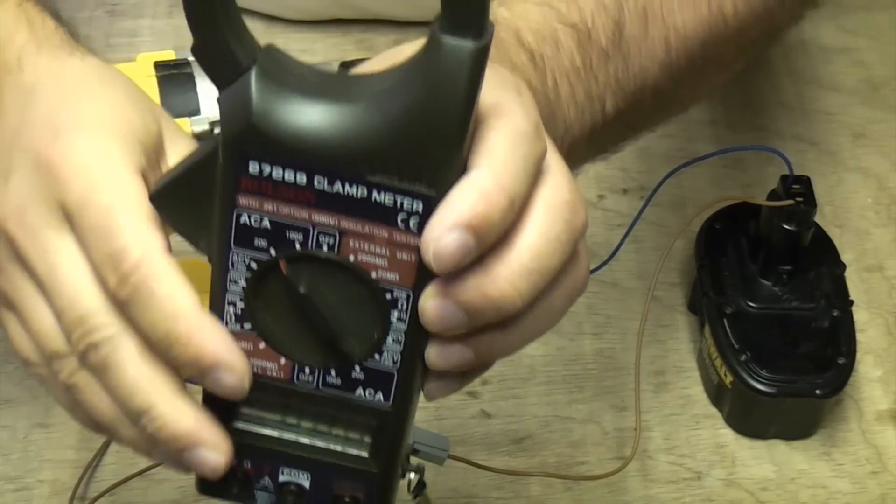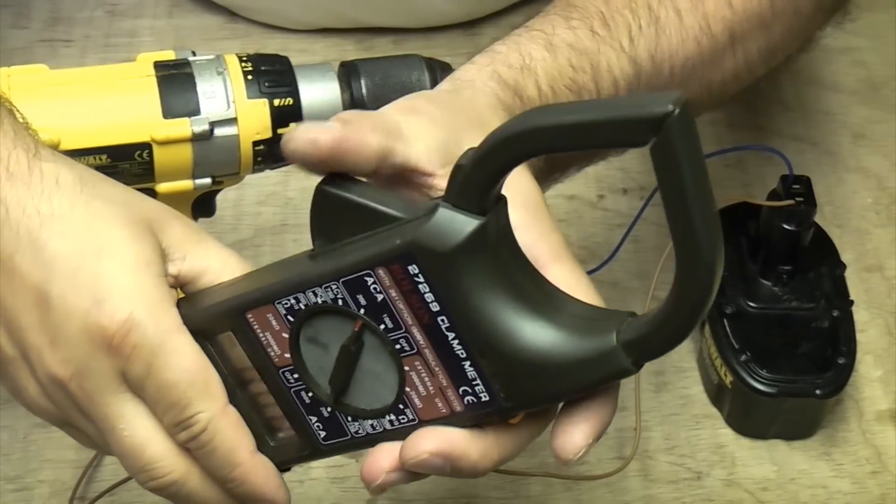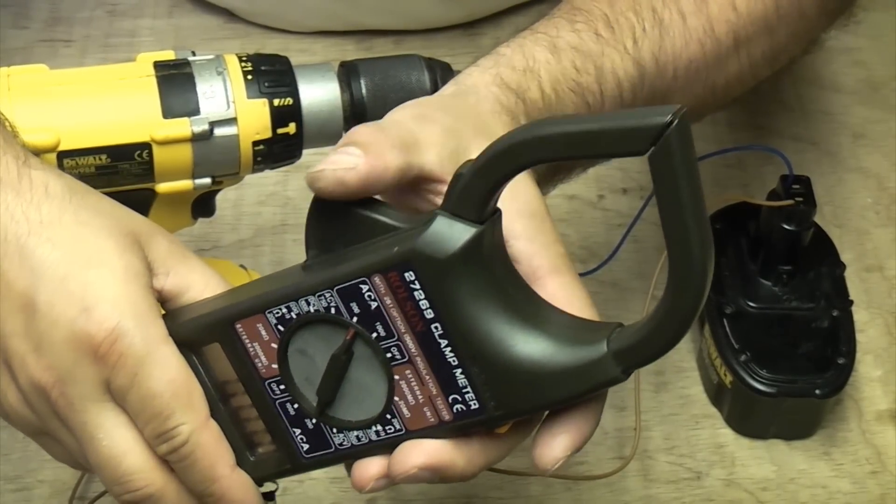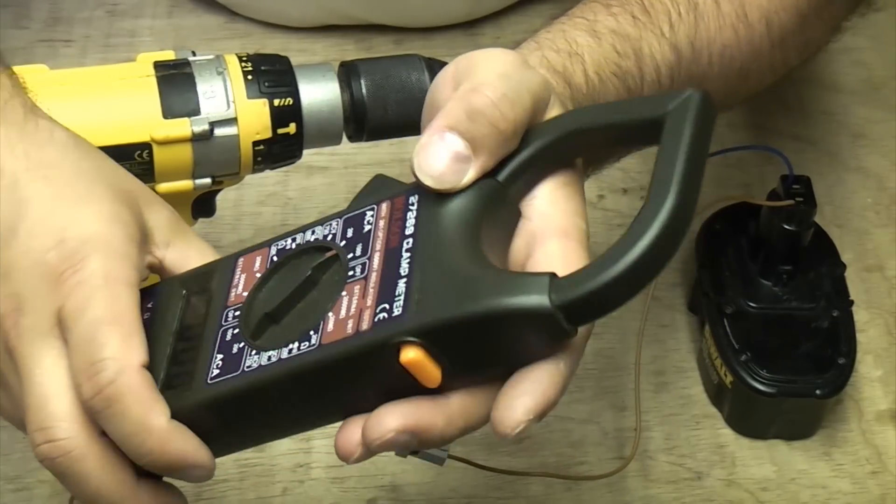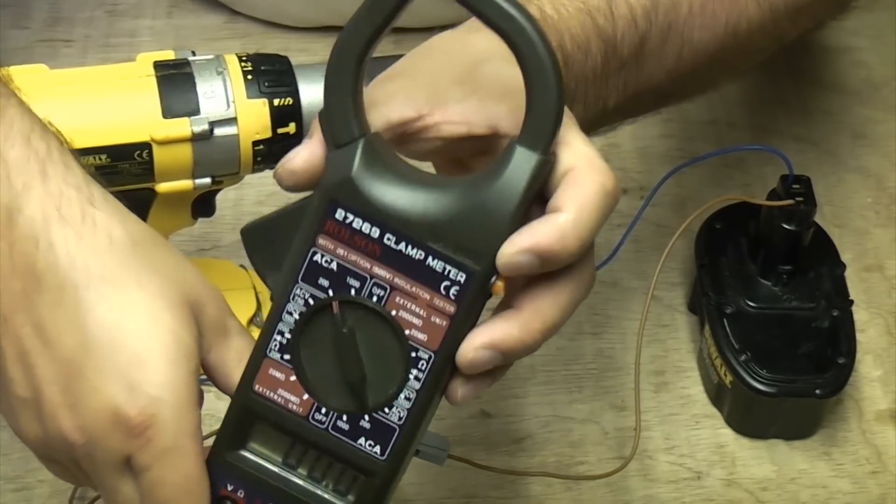This particular meter has a clamp function there and you can actually clamp that over a wire, but you can't measure voltage by doing that - you can only measure the actual amps that's going through the wire.